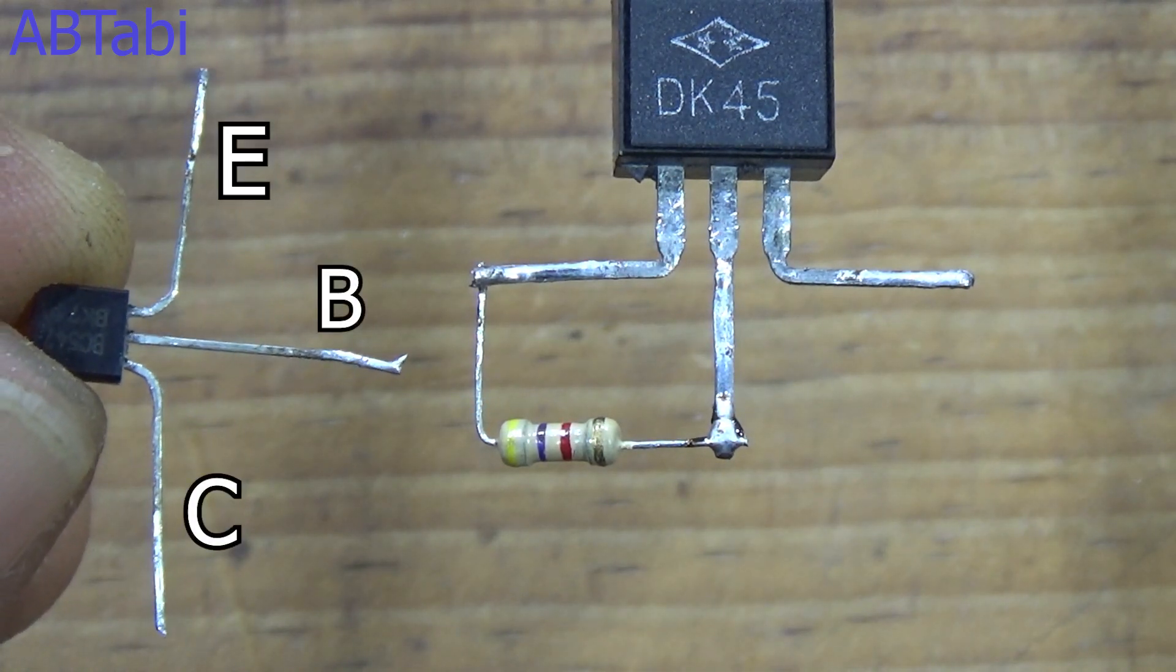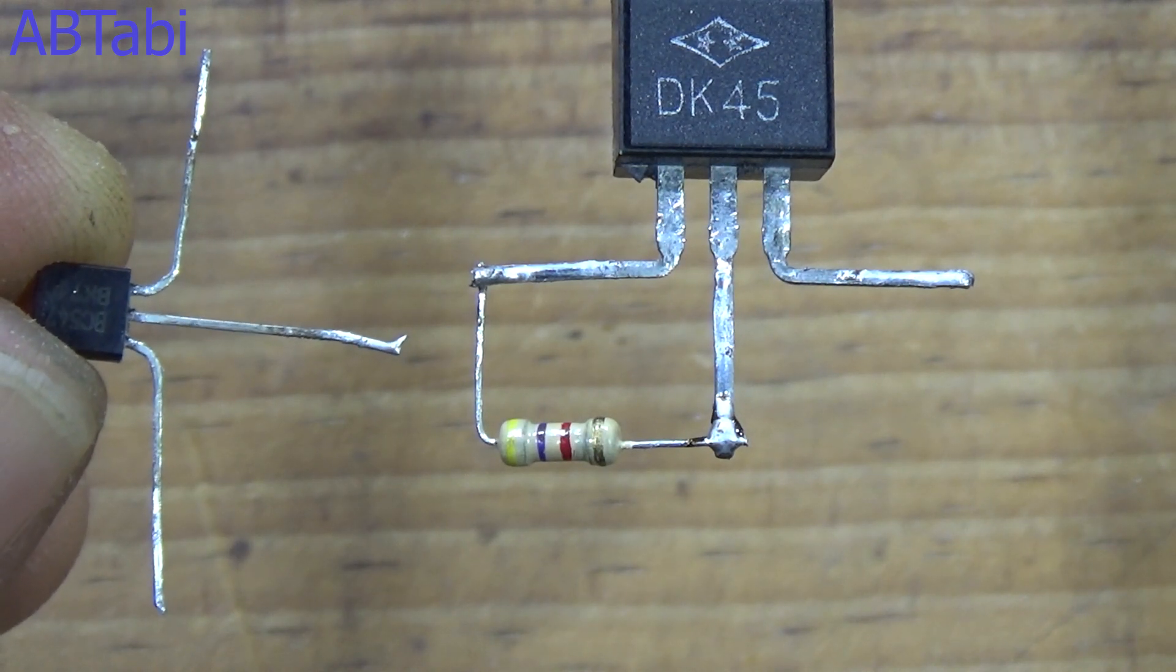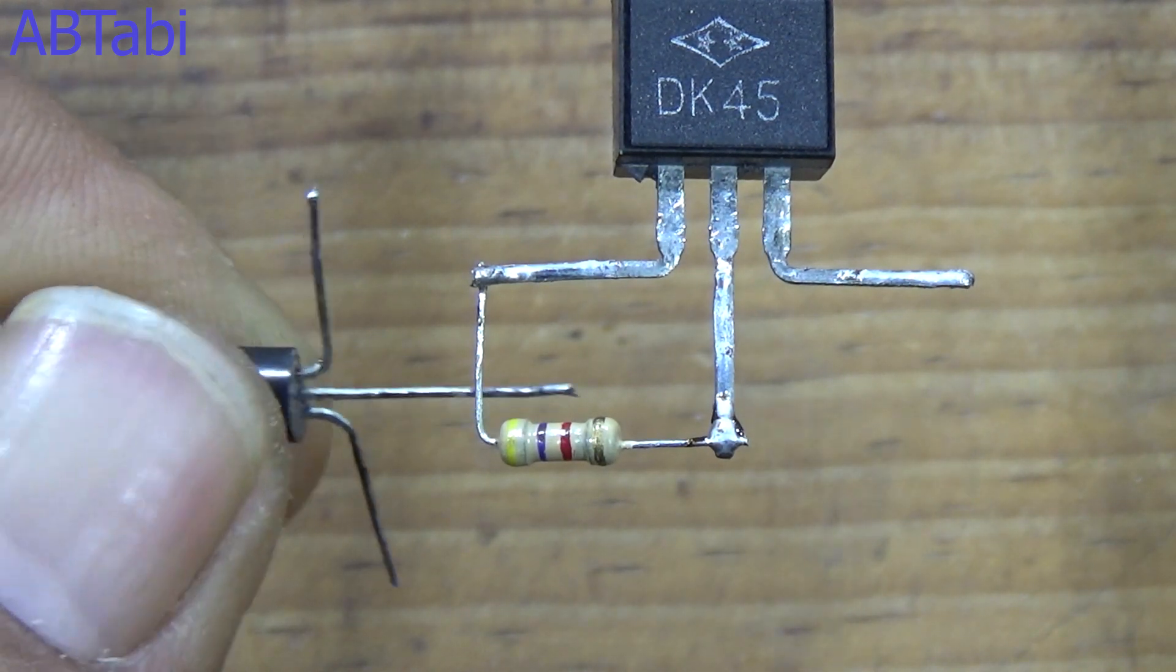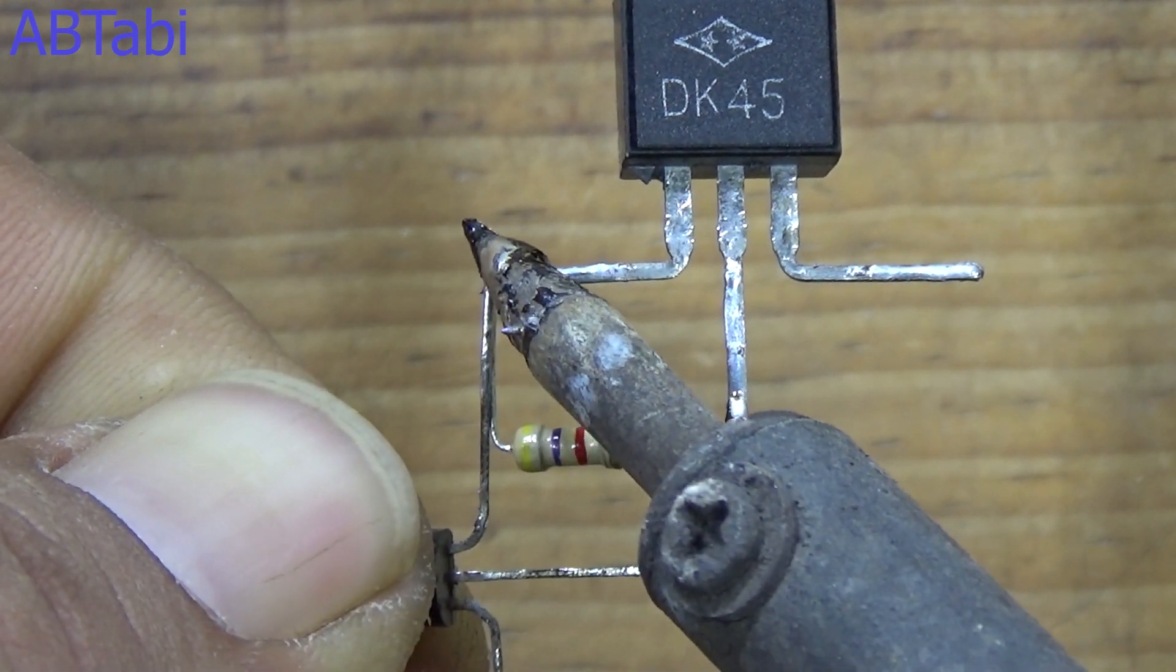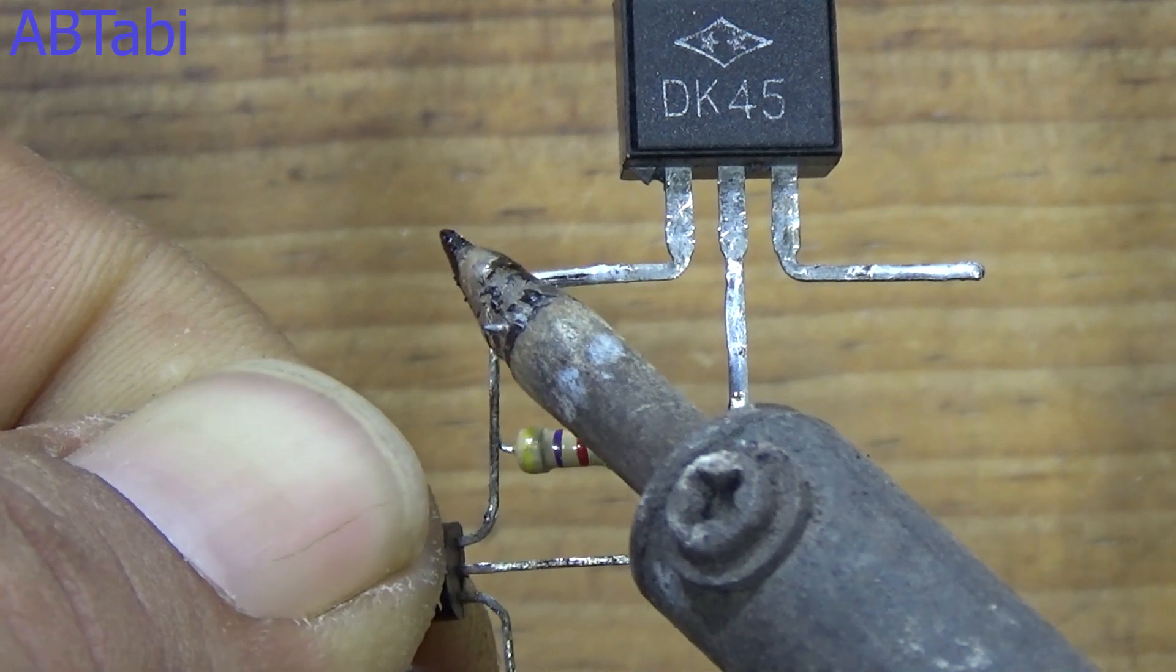Also remember the BC547 transistor collector, base, and emitter pins. BC547 transistor collector pin connects with DK45 transistor base pin.